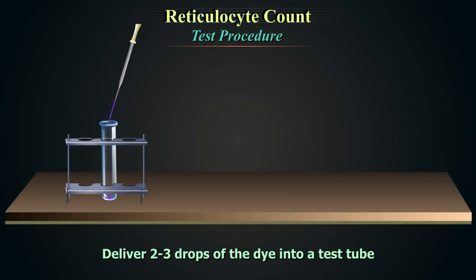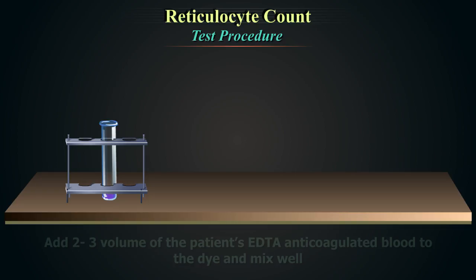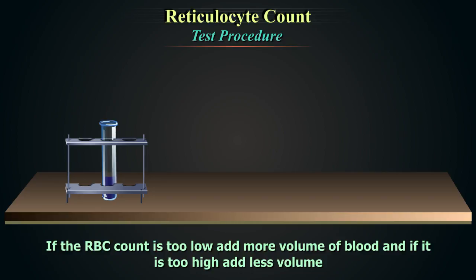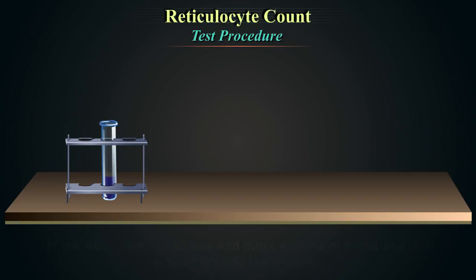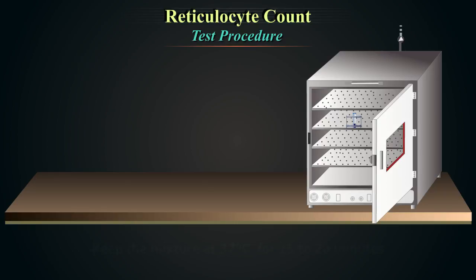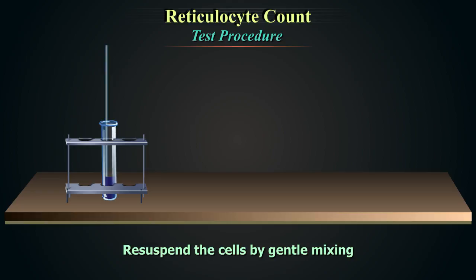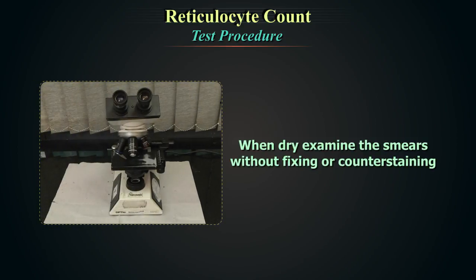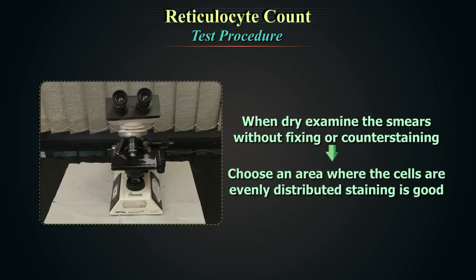Deliver 2–3 drops of the dye into a test tube. Add 2–3 volumes of the patient's EDTA anticoagulated blood to the dye and mix well. If the red blood cell count is too low, add more volume of blood; if too high, add less. Keep the mixture at 37 degrees centigrade for 15–20 minutes. Re-suspend the cells by gentle mixing and make smears on glass slides. When dry, examine the smears without fixing or counter staining.